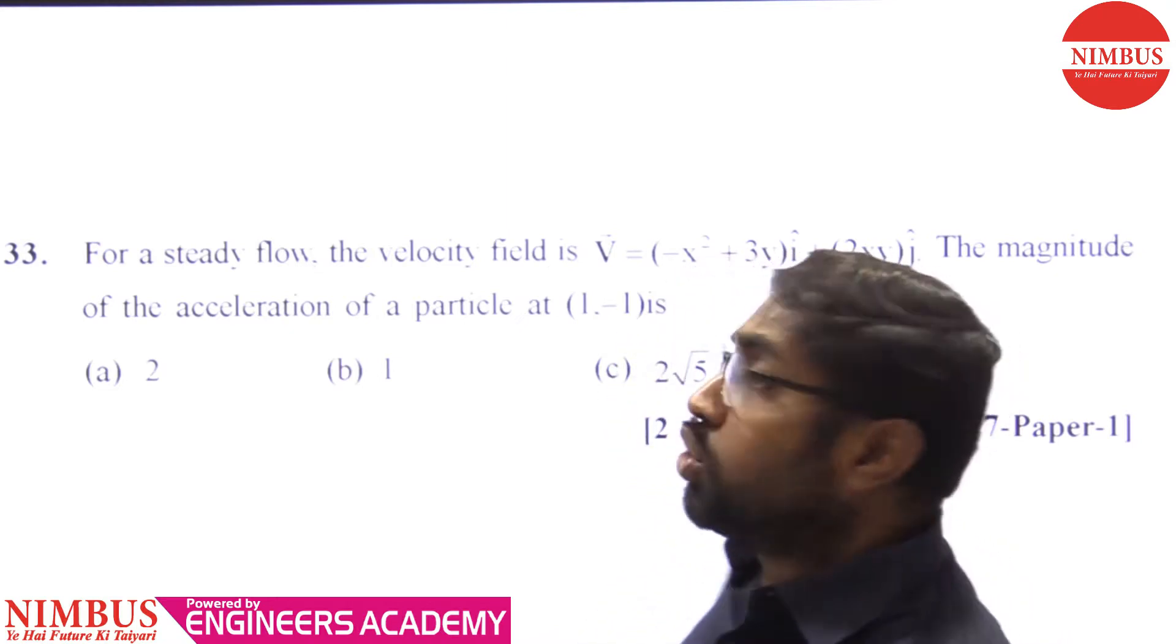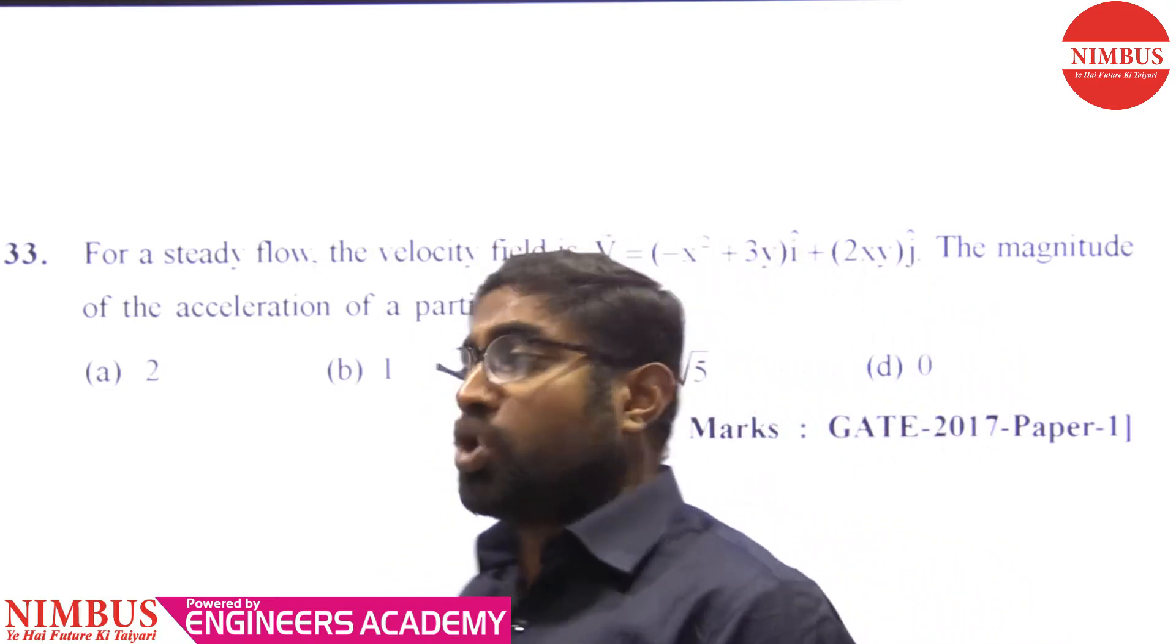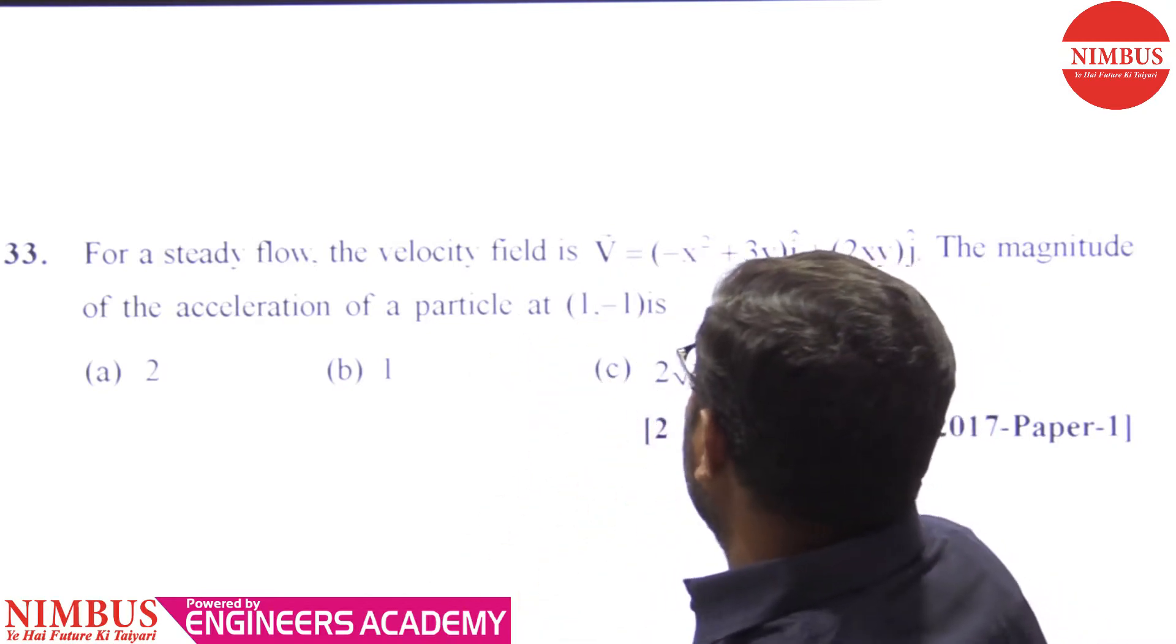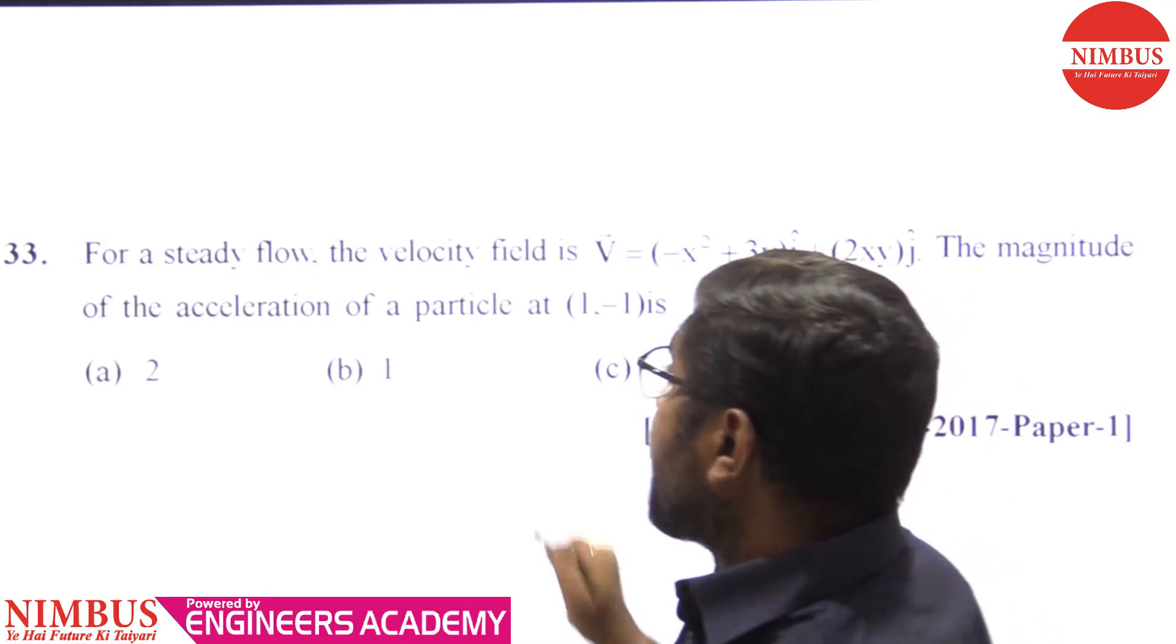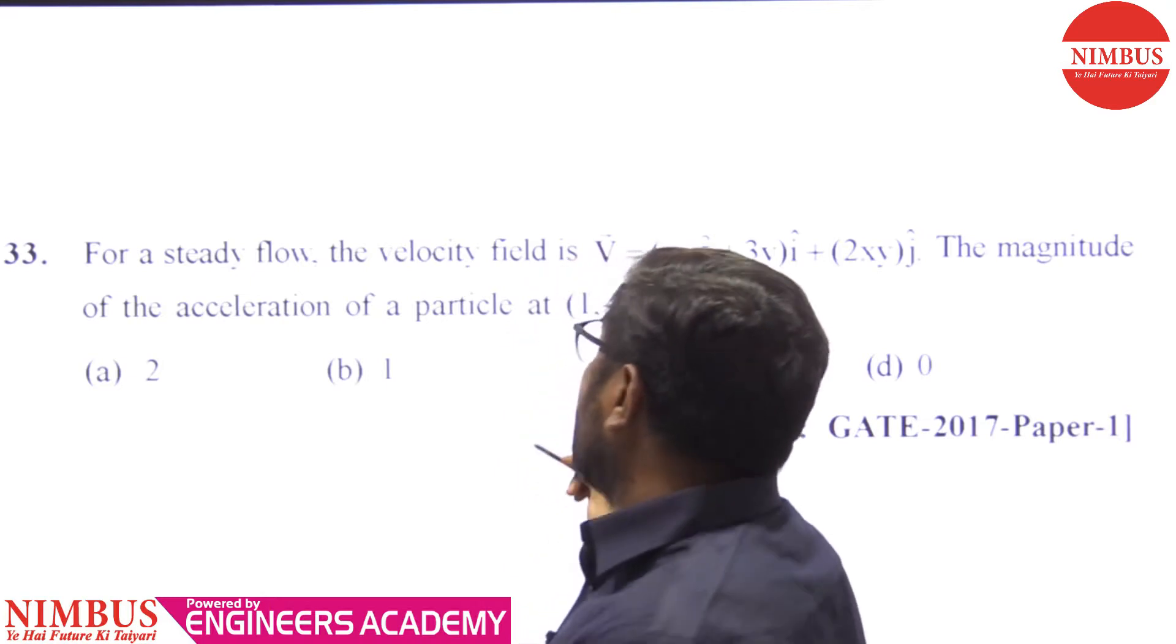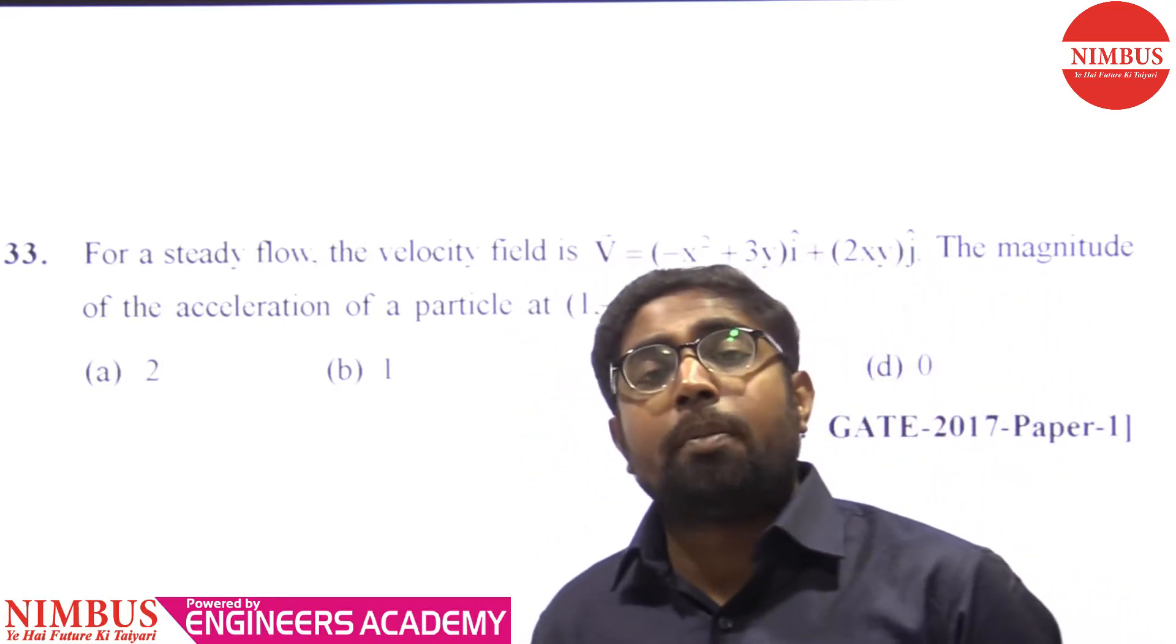For a steady flow, the velocity field is V equals to... The magnitude of acceleration at a particular point at (1,1).